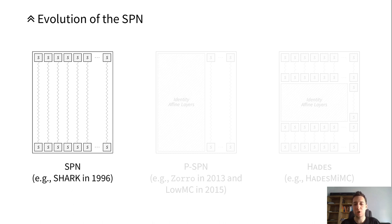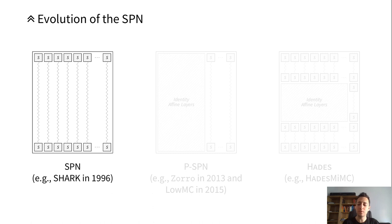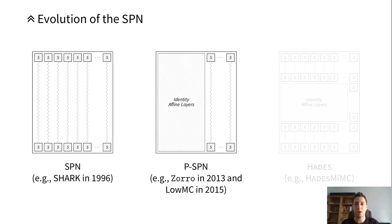What is a partial SPN? I will begin with the classical substitution permutation network shown on the left side. For example, Shark from 1996 is a classical SPN, which means that in the non-linear layer the S-boxes are applied to the whole state, then there is the affine layer, then again a non-linear layer, and so on for several rounds. The main difference is that the S-boxes are applied to the whole state. In a partial SPN — for example Zorro from 2013 or Loimsee from 2015 — the S-boxes are only applied to part of the state in the non-linear layer, and the rest of the state remains unchanged — an identity function — while the affine layers are still applied to the whole state.